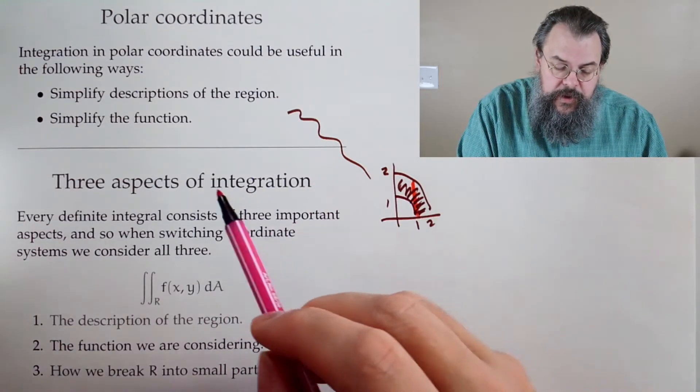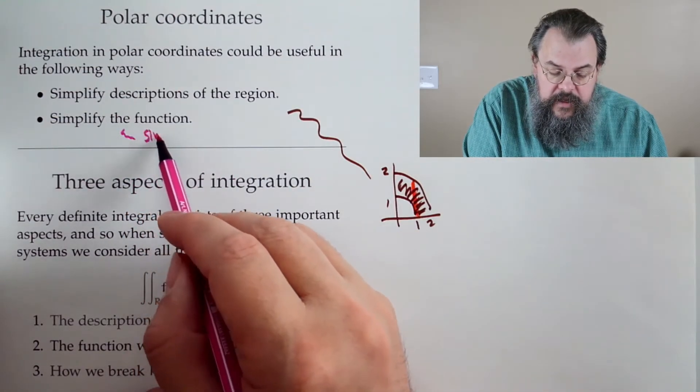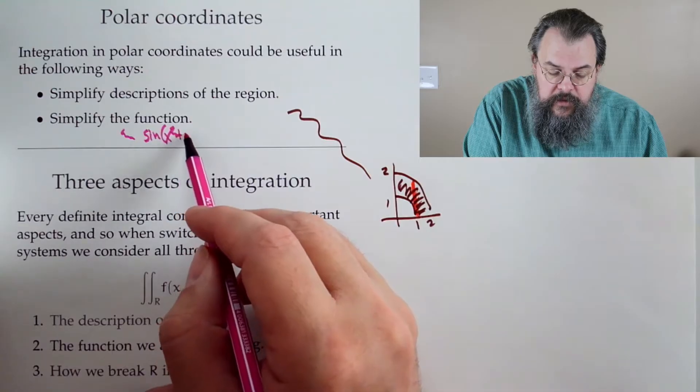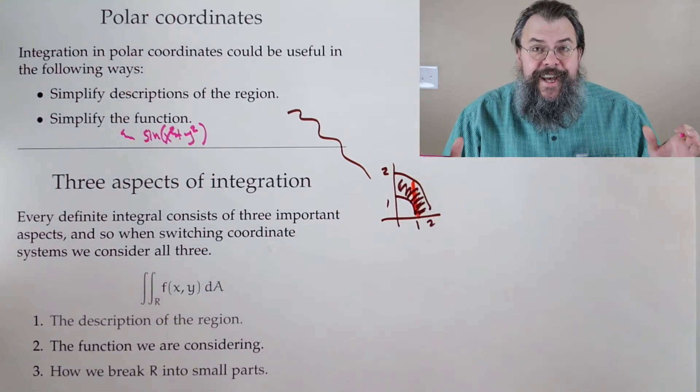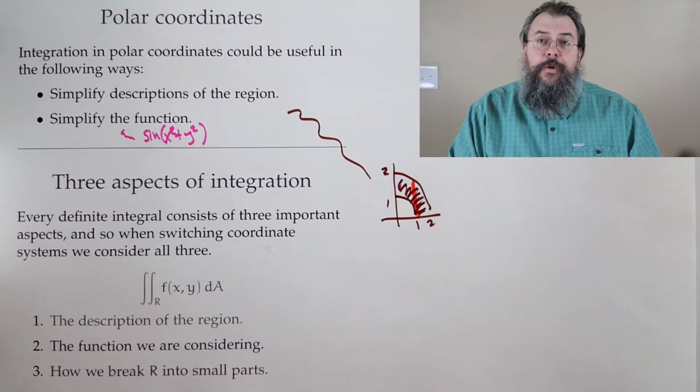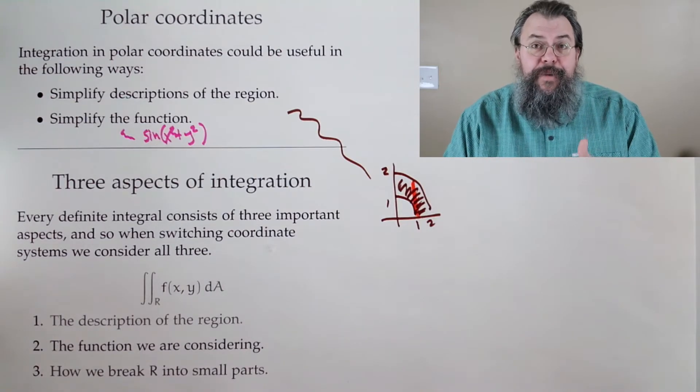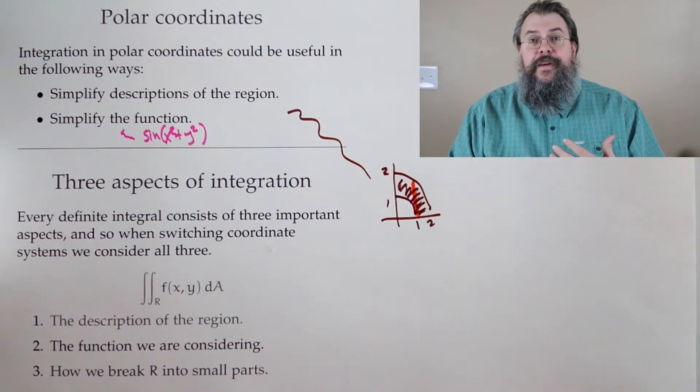What's an example? Well, you could imagine something like sine of x squared plus y squared. That looks terrible. We'd never want to integrate that if we didn't have to. But we could say, well, what's one of the things that's making this bad?